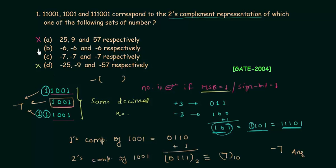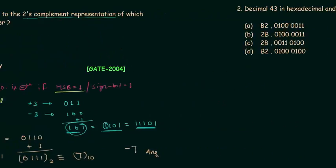All three representations represent minus 7, so option B is incorrect and option C is the correct answer for this first problem. Instead of solving for all three representations, we used the property of 2's complement representation — repeating the sign bit doesn't change the value. This saves a lot of time, so go for this method. Now we will move to problem number 2.